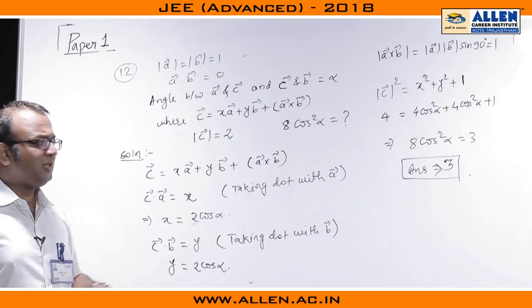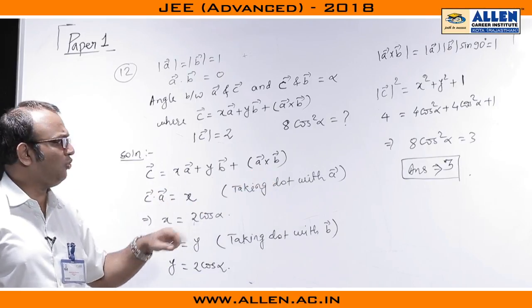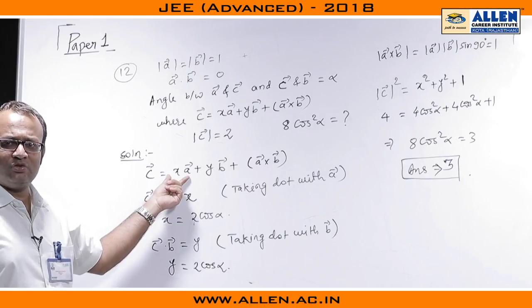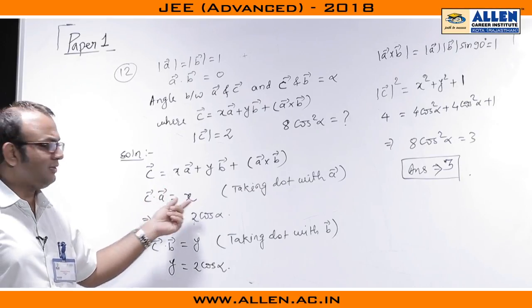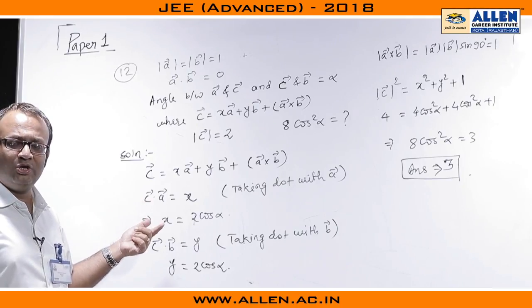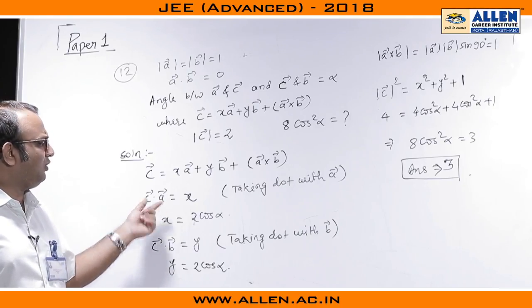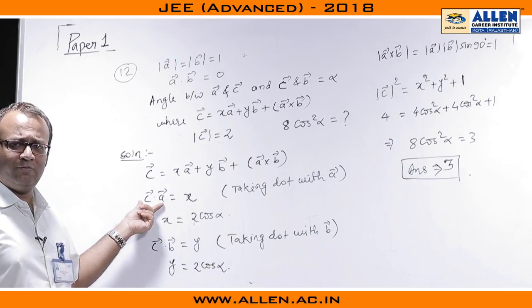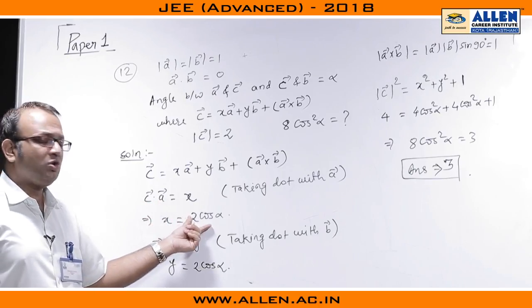So if I take the dot product with A, A cross B dot A is going to vanish, B dot A is going to vanish and here we will be having A dot A which is 1. So we are having X here and here we will be having C dot A. Modulus of C is known to us to be 2. Therefore, the dot product value is going to be 2 cos alpha as the angle between C and A is alpha. So the value of X is 2 cos alpha.